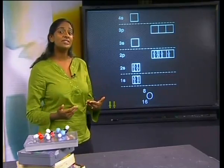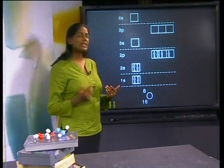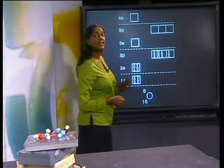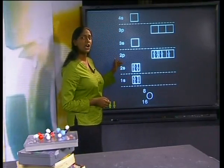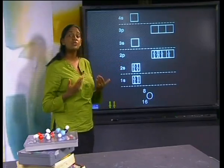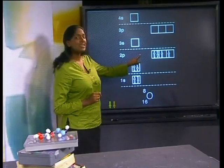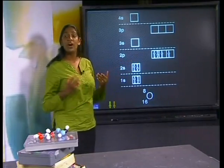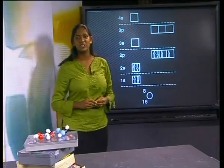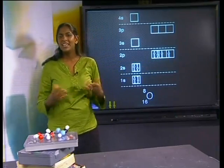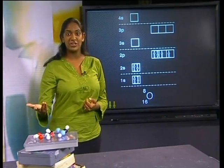Let's look at the energy level diagram for oxygen again. Do you see that the first energy level is filled, but the second energy level is not? The second level has room for 8 electrons, but there are only 6 electrons here. So oxygen needs another 2 electrons to fill the outer energy level. It's easier to take on 2 electrons than to give away 6 electrons.